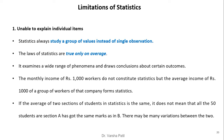The first limitation of statistics is its inability to explain individual terms. Statistics always studies a group of values instead of a single observation. The laws of statistics are true only on average. For example, the monthly income of a thousand workers does not constitute statistics, but the average income of that group does. If two sections of students have the same average marks, it does not mean all students have identical marks — individual marks may vary significantly between the two sections.